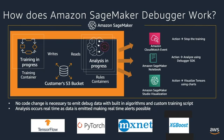To enable SageMaker Debugger, you need to initialize a hook which attaches itself to the training process and emits data necessary for debugging. Those data will be saved in S3. Debugger then uses a set of rules to analyze those data in a streaming fashion. A rule here is a piece of code which encapsulates the logic for analyzing debugging data.